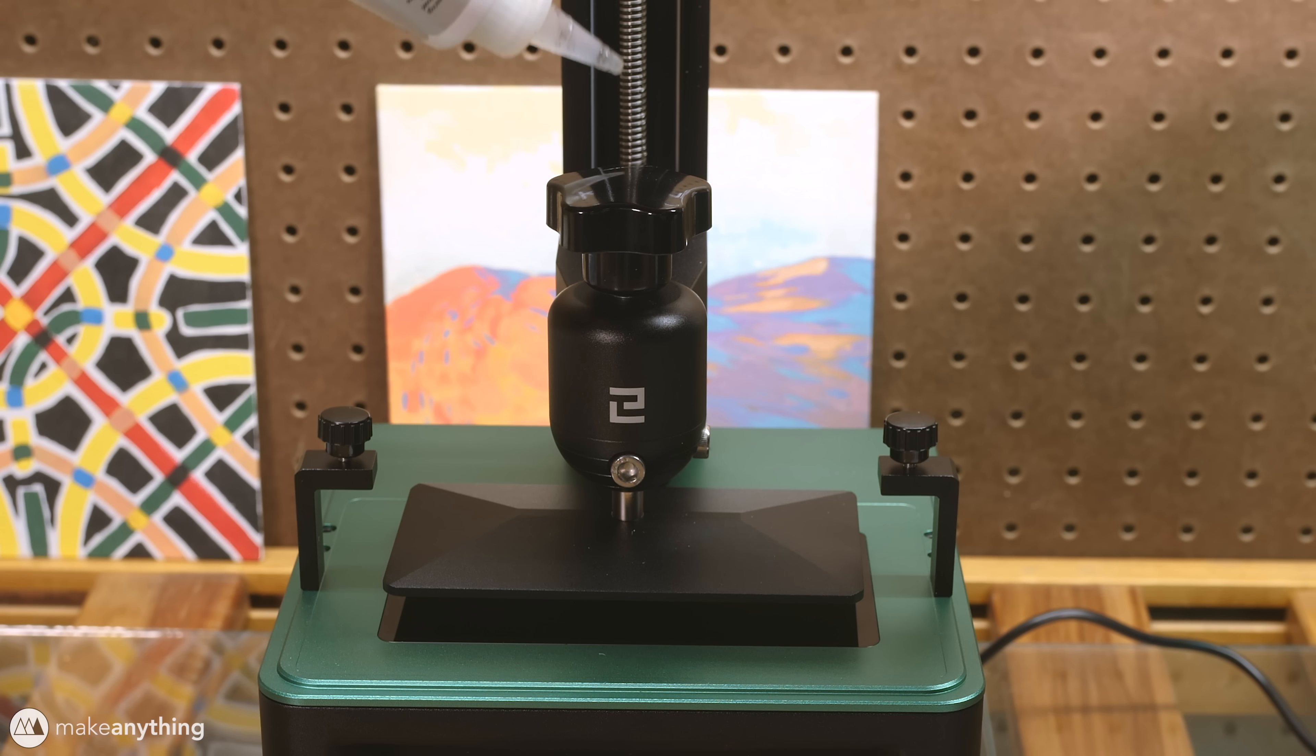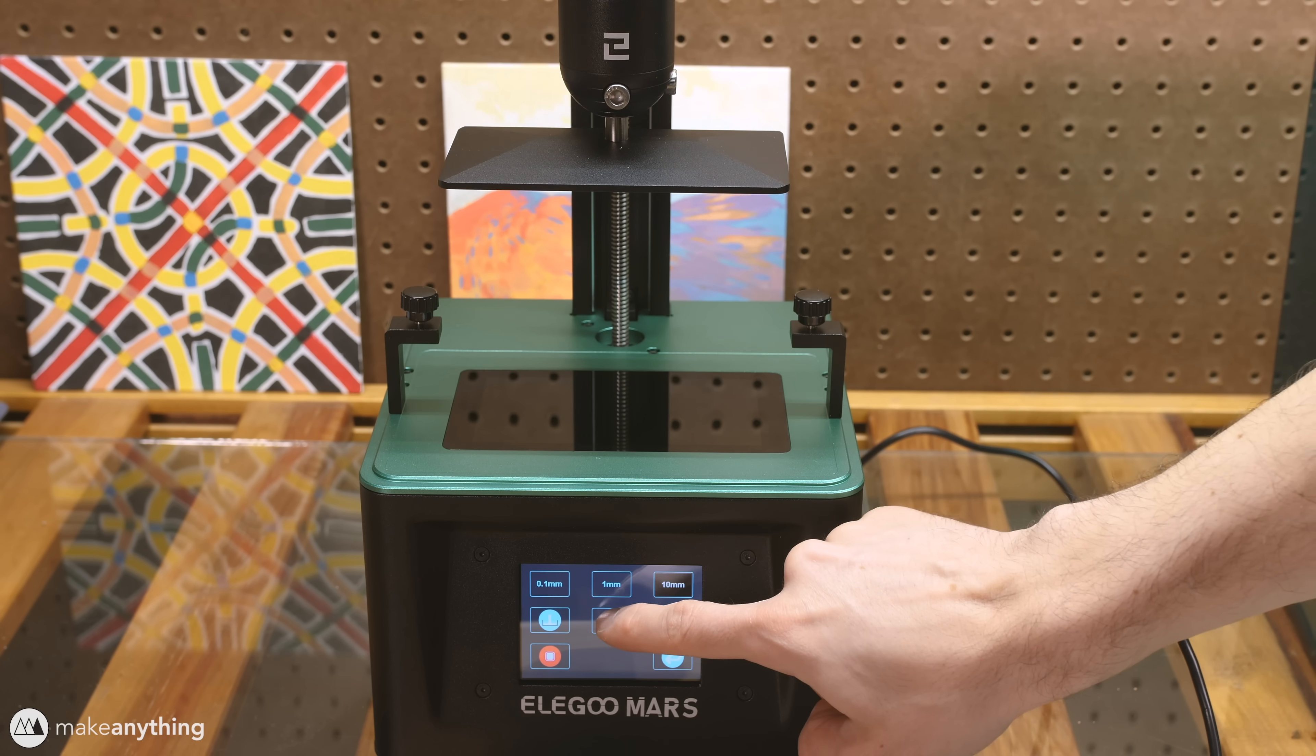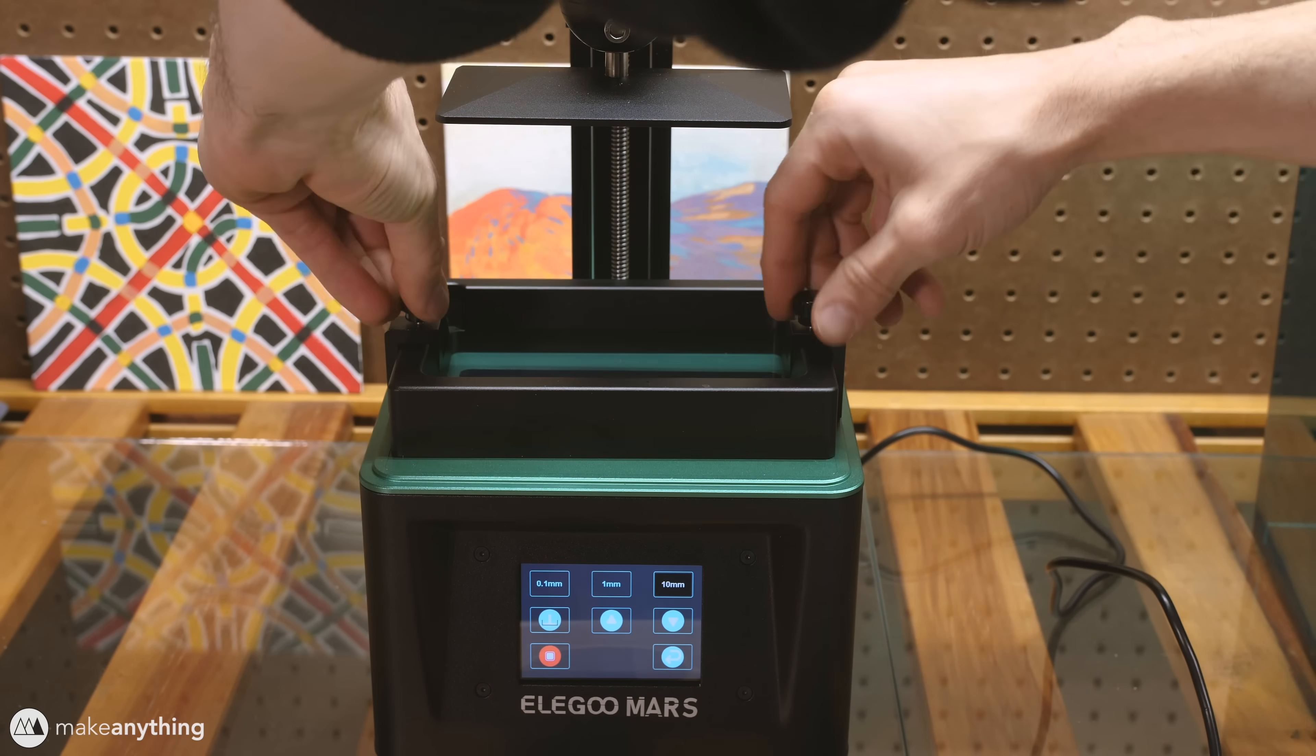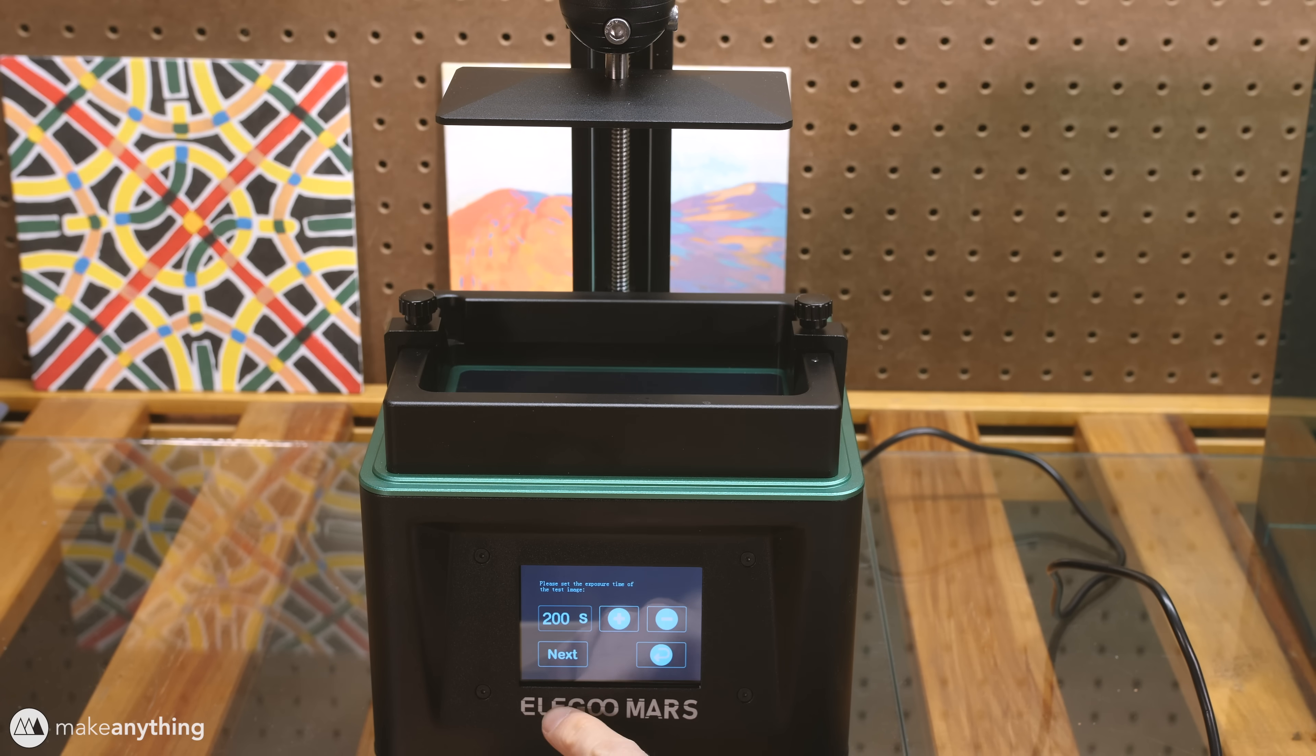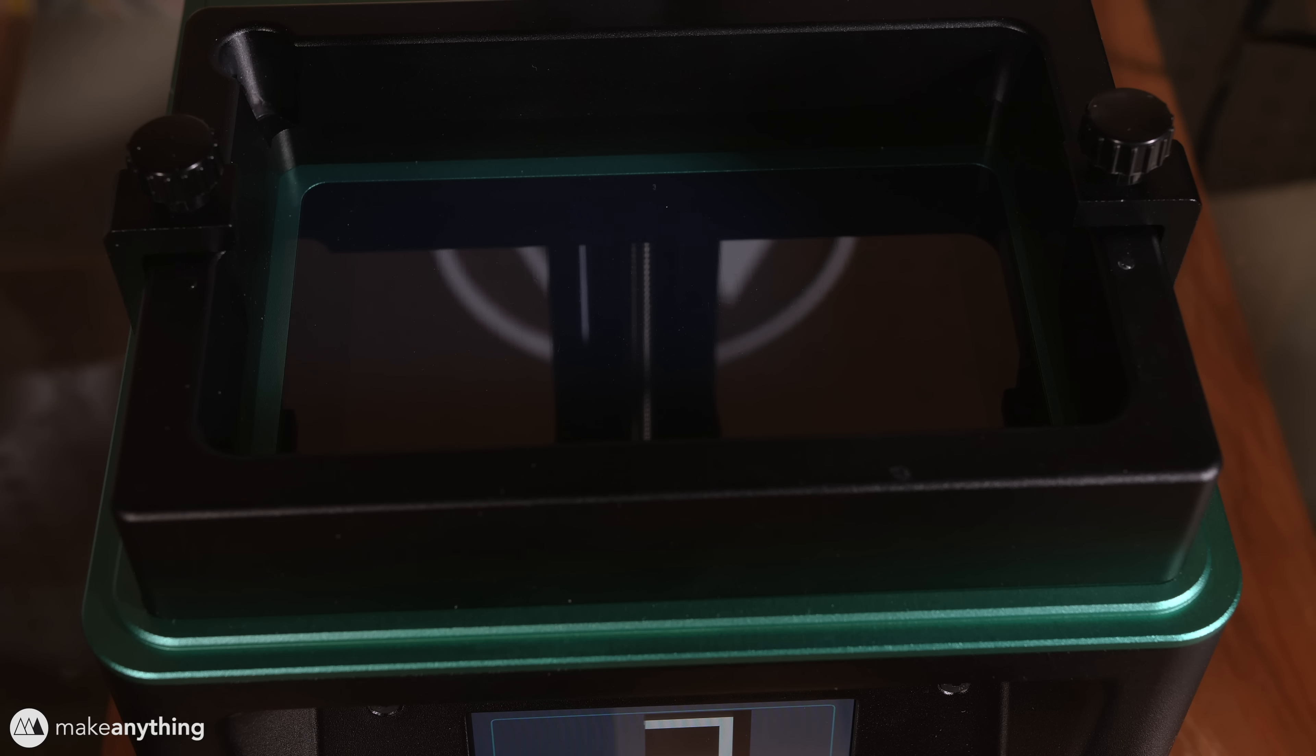I also put a little bit of lubricant on the Z axis here since it was squeaking a tiny bit just to be safe. And now we can go ahead lift up our build plate, put the vat into place, and then I'll run this quick test exposure to make sure that the UV LCD screen is running.